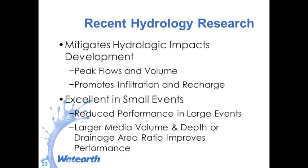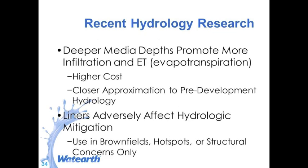As rainfall events get larger, we see reduced performance, but even in 100-year events and up to 8 to 10 inch range, we can still see reduction in peak flow. So it can play a role in reducing the size of the storm drain system on certain projects — that's where some of the cost savings comes in. Pre-treatment is not required, but if you have heavy sediment loads or are in a cold weather climate, it's very helpful to include some type of pre-treatment: a filter strip, a sediment trap, or a depressed area right at the entrance of the bioretention.